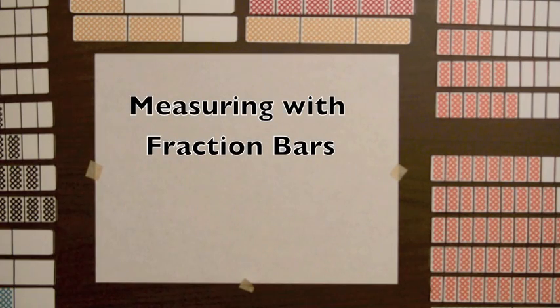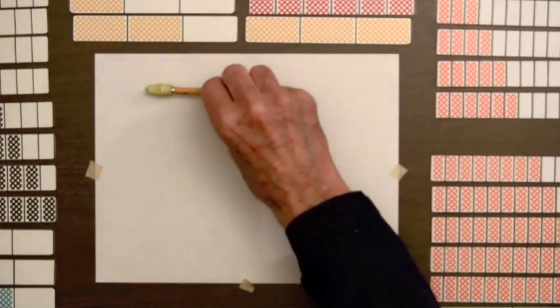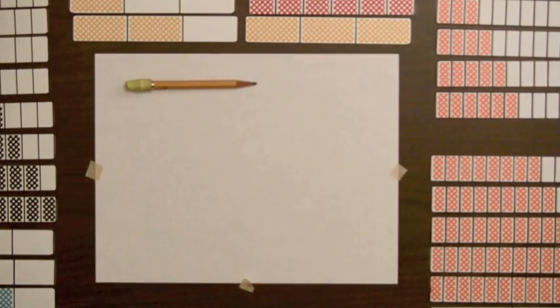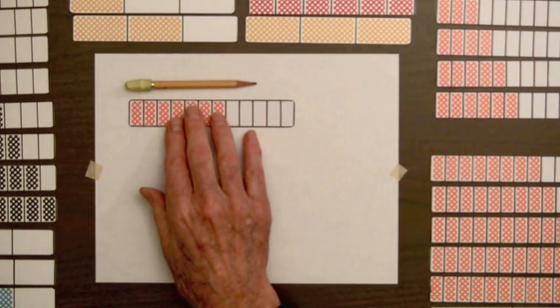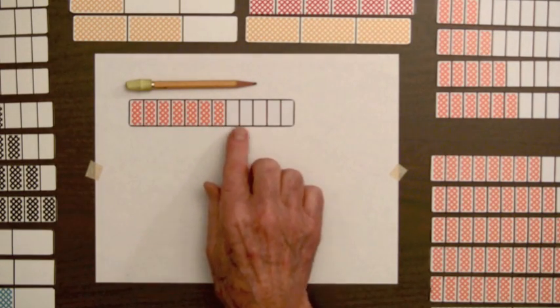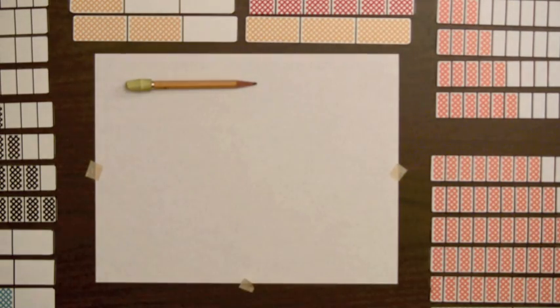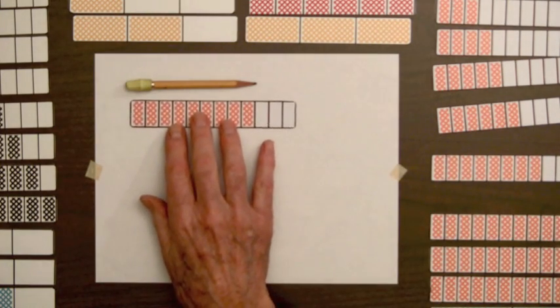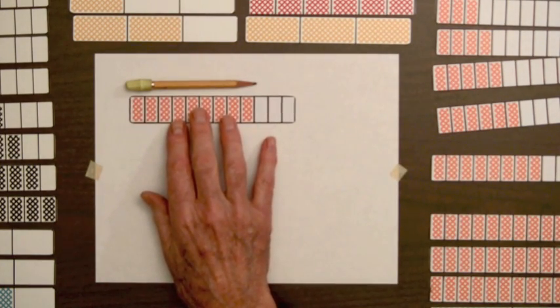Let's begin using Fraction Bars to measure the length of some objects. The length of this pencil is longer than 7 parts out of 12. We've got to increase the number of shaded parts. This looks like we have it here.